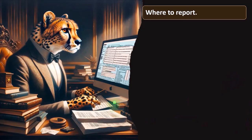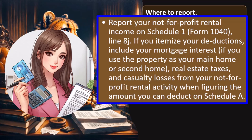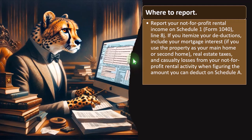Report not-for-profit rental income on Form 1040, line 8j. If you itemize your deductions, include mortgage interest — if you use the property as your main or second home — real estate taxes, and casualty losses from the not-for-profit rental activity when figuring the amount you can deduct on Schedule A.